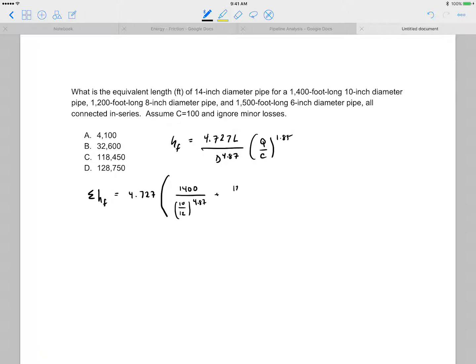plus 1,200 foot of 8 over 12 raised to the 4.87, plus 1,500 foot of 6 over 12 to the 4.87, close the brackets,